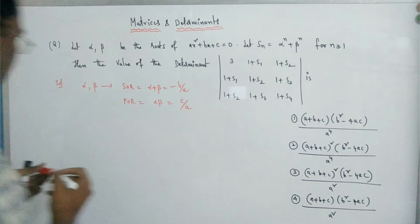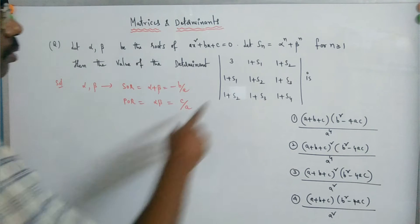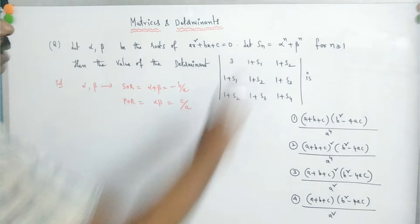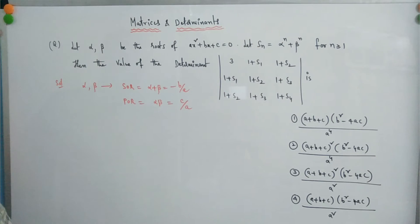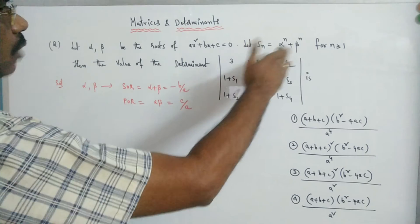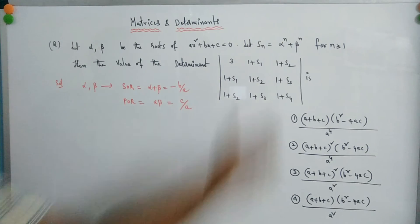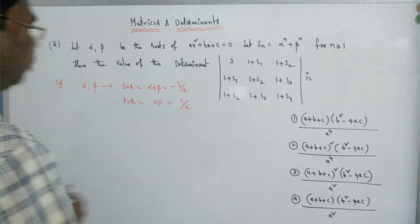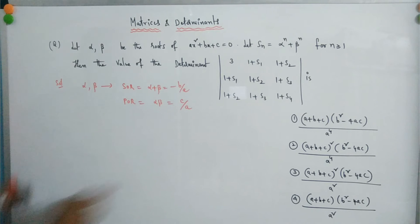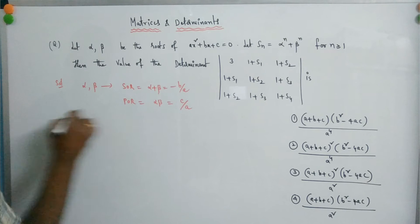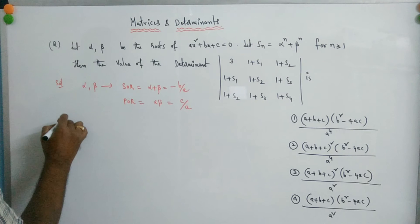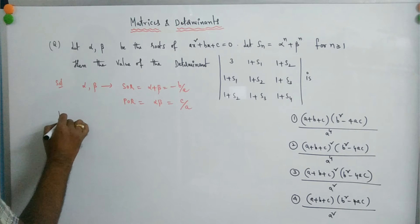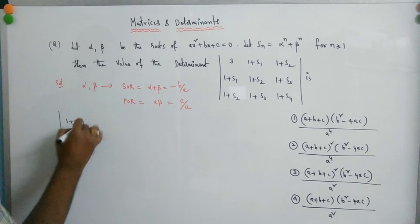Now, S1 = α + β, S2 = α² + β², S3 = α³ + β³. The determinant given is: 3, 1+S1, 1+S2; 1+S1, 1+S2, 1+S3; 1+S2, 1+S3, 1+S4. Now this can be written as the product of two determinants.